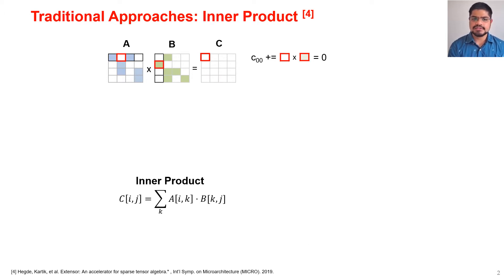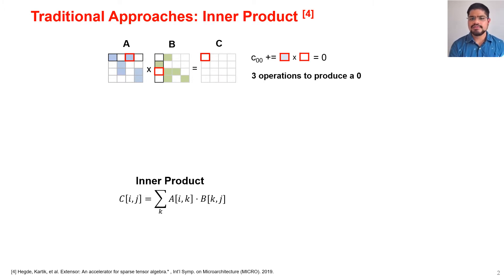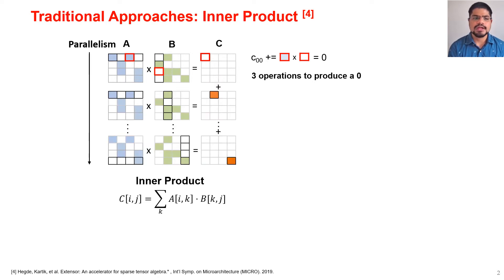In the second cycle, B has the smallest index but A has a zero, so we don't perform any math. And even in the last step, A has a non-zero and B has a zero, so again we don't perform any math. Thus, even with three operations we produce a single output element which is a zero. The parallelism comes from the fact that different output elements can be produced in parallel.